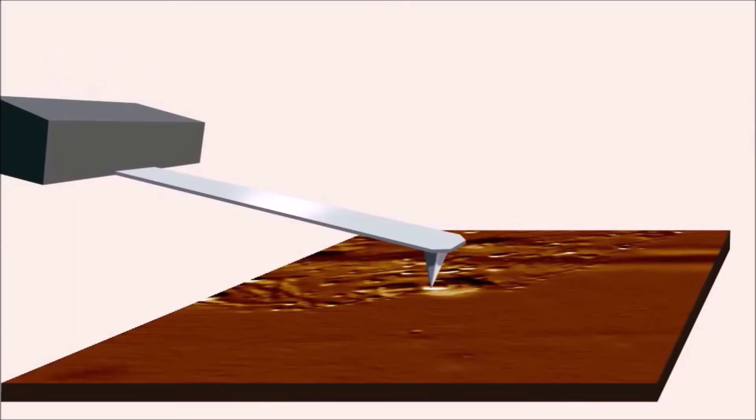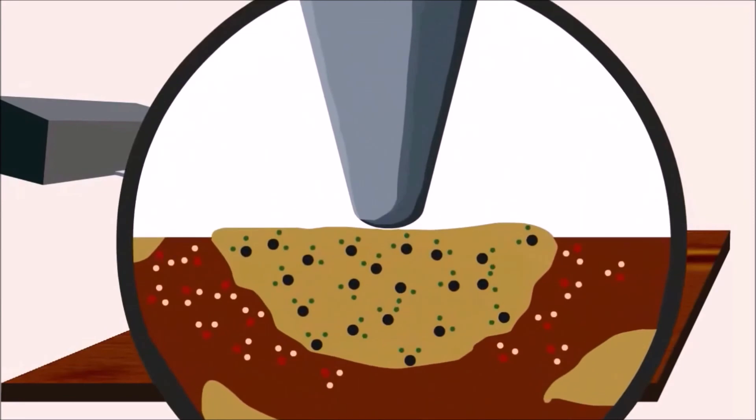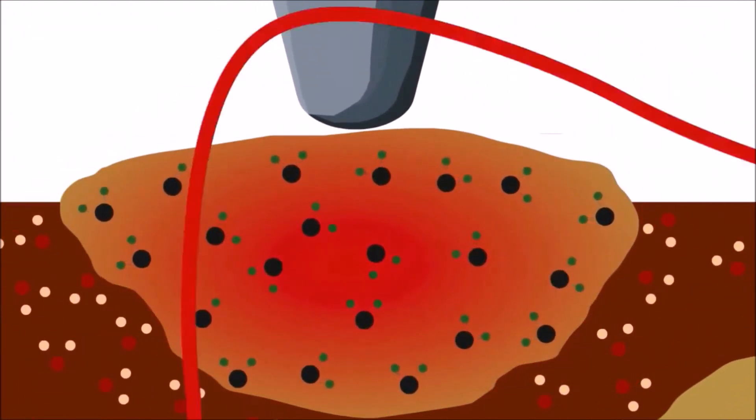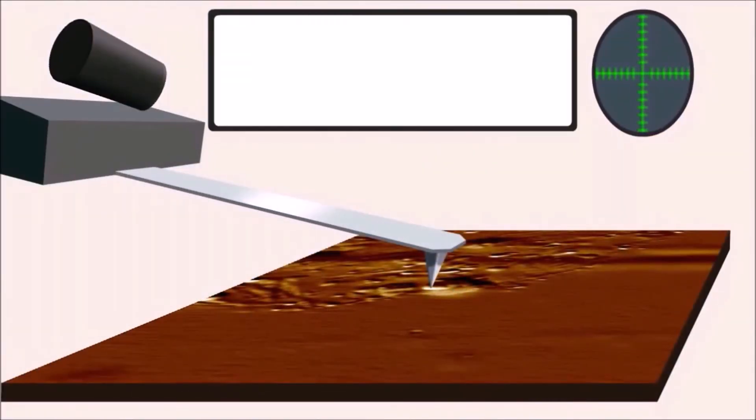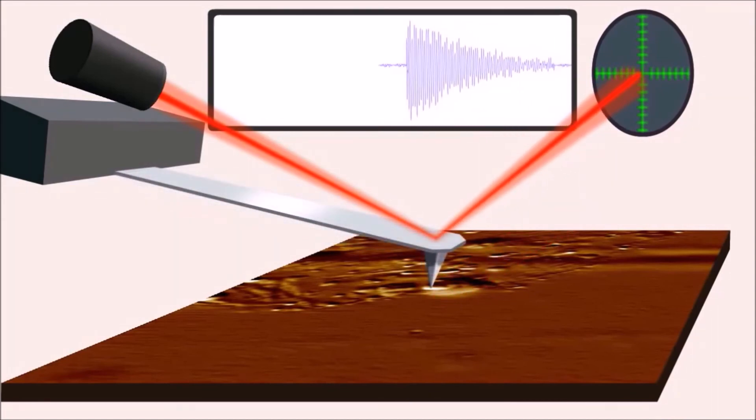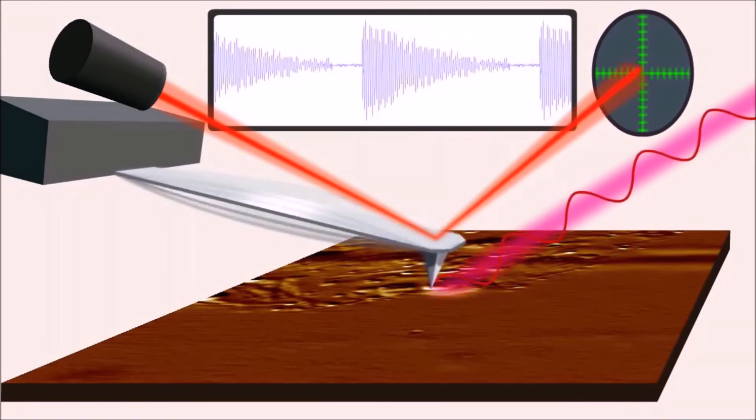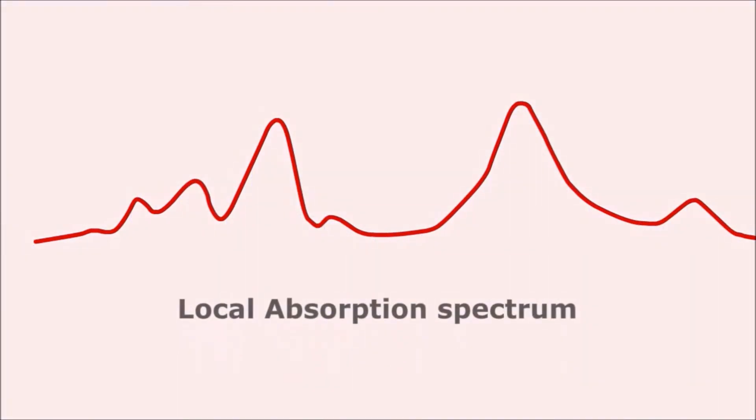This animation shows the overall working principle of AFM IR. IR light is incident on the sample. The incident light causes thermal expansion. This thermal expansion causes instantaneous oscillation in the cantilever which is recorded through another laser and a detector. From the cantilever oscillation, we get the local absorption spectrum.